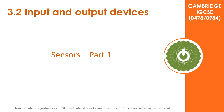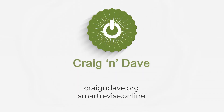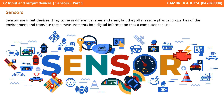In this video, part one of a two-part series, we take a look at sensors. Sensors are input devices. They come in many different shapes and sizes, but they are essentially all measuring the physical properties of their environment and translating those signals into digital information a computer can use.